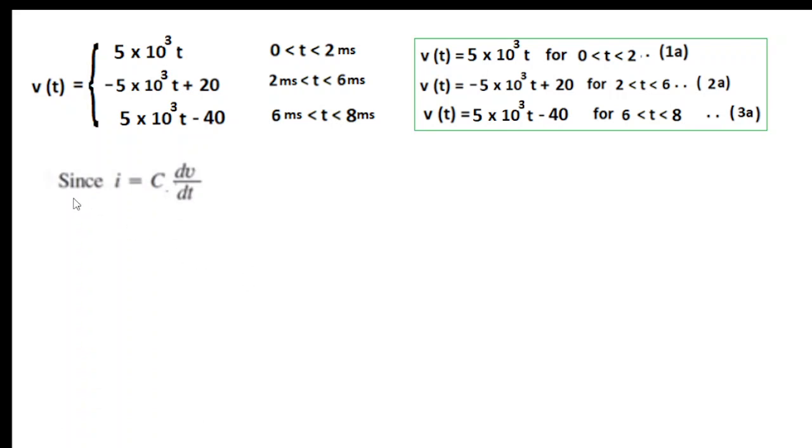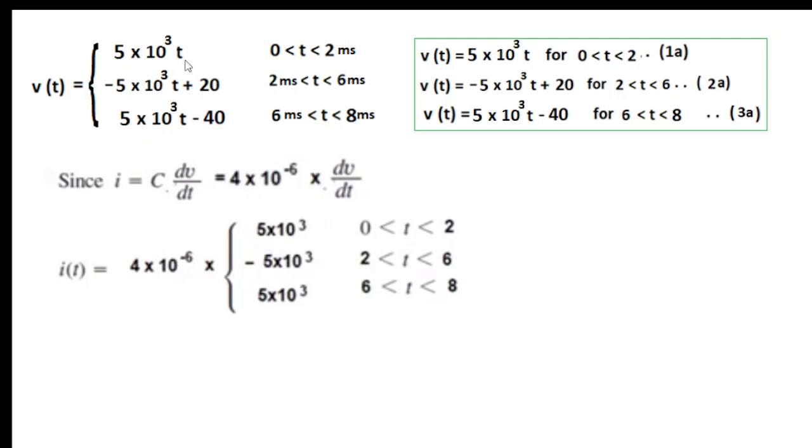Now we calculate the current. The current through the capacitor formula is i equals C dv/dt. C is given as 4 into 10 to the power minus 6. We differentiate the voltage with respect to t. Differentiation of 5 into 10 raised to the power 3 times t gives 5 into 10 raised to the power 3, and differentiation of constant is 0. Same for the third term, 5 into 10 raised to the power 3 for 6 to 8 milliseconds. Multiplying to get the final value.